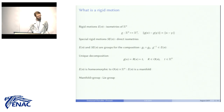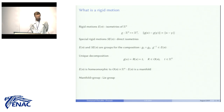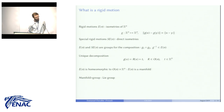Given a rigid motion G, there is a unique orthogonal linear map R and a translation vector T such that G(x) = R(x) + T. This provides a homeomorphism between the set of rigid motions and the product of orthogonal transformations times R^n. Since this is a homeomorphism, rigid motions form a manifold, and the group structure is compatible with the manifold, making it a Lie group.